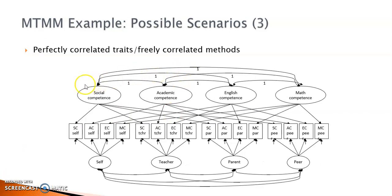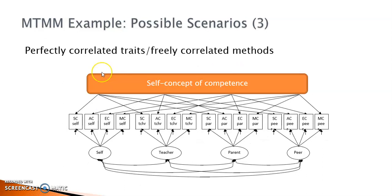In model three, the four methods are still freely correlated and there are perfect correlations between all four traits, which actually means there is only one trait instead of four. If model one has better fit than model three, it provides evidence for discriminant validity among the four traits, because the model with four different self-concepts fits the data better than the model with only one self-concept.